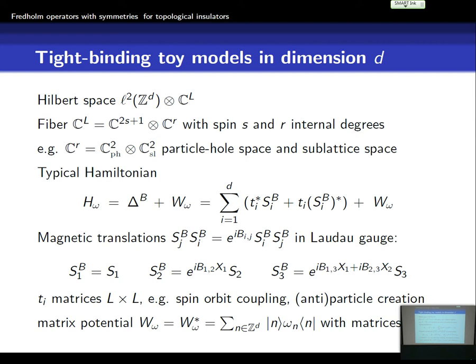Internal degrees of freedom can be a particle-hole space or a sublattice space that is present in the system. The typical Hamiltonian consists of a Laplacian and a potential. The Laplacian is a magnetic Laplacian, so it comes with magnetic translations. These are shift operators which don't commute — in each direction you have one, and they commute only up to a phase. The kinetic part also contains hopping elements which act on the fibers, and this allows you to describe spin-orbit couplings and other features of these systems.